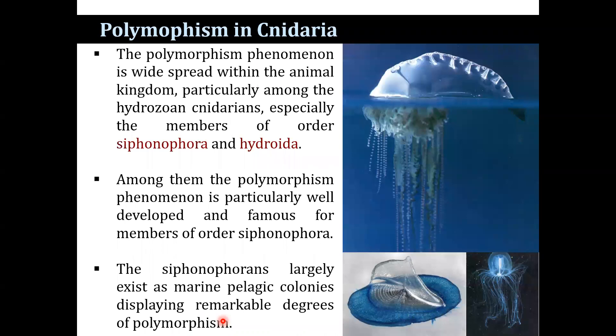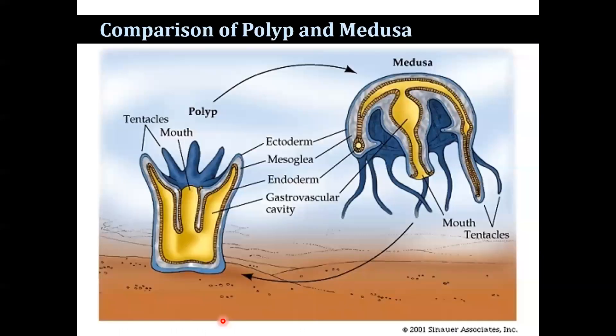The polymorphism phenomenon is widespread within the animal kingdom, particularly among the hydrozoan cnidarians, especially the members of order Siphonophora and Hydroida. Among them, polymorphism is particularly well-developed and famous for the members of order Siphonophora. The siphonophorans largely exist as marine pelagic colonies, displaying remarkable degrees of polymorphism.